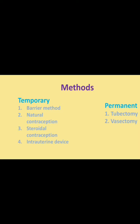Next are permanent methods, which include tubectomy and vasectomy. The effectiveness of contraceptives is studied by their failure rate. Next, we will discuss the different methods in detail.